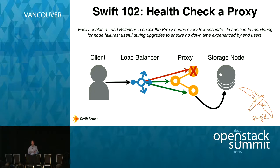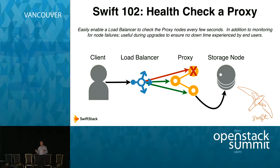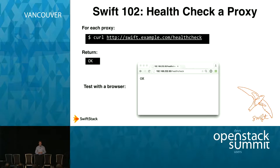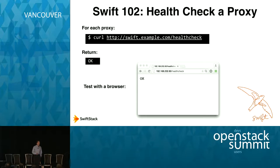This helps a lot when talking about rolling upgrades in Swift, because Swift is a huge distributed platform that should have no downtime. If a node fails and does not give you that OK response, or if you're intending to do an update, the node would stop accepting new requests and change its status from OK to not OK to notify the load balancer. If you go to any Swift proxy node slash healthcheck, you should get a return of OK.